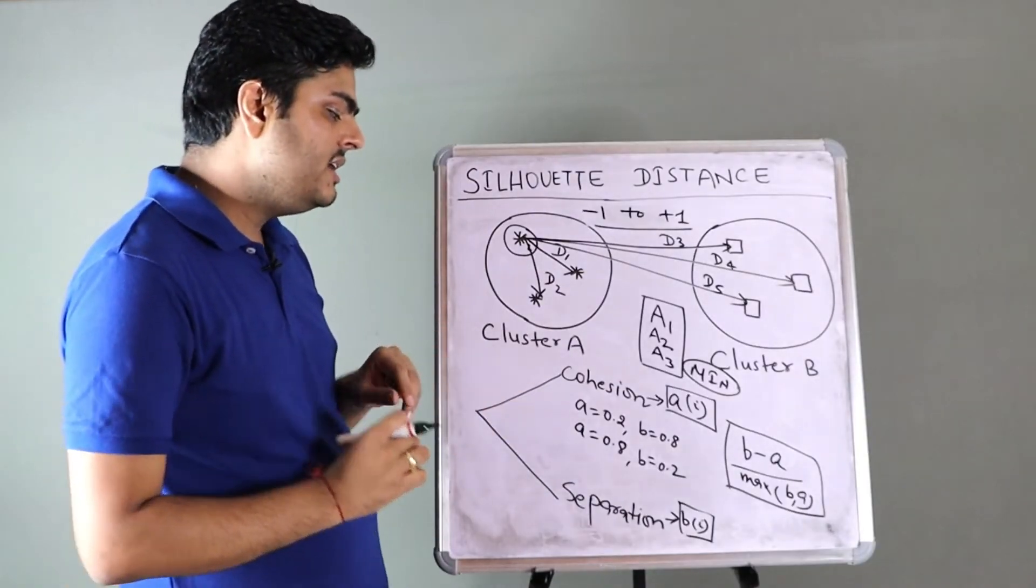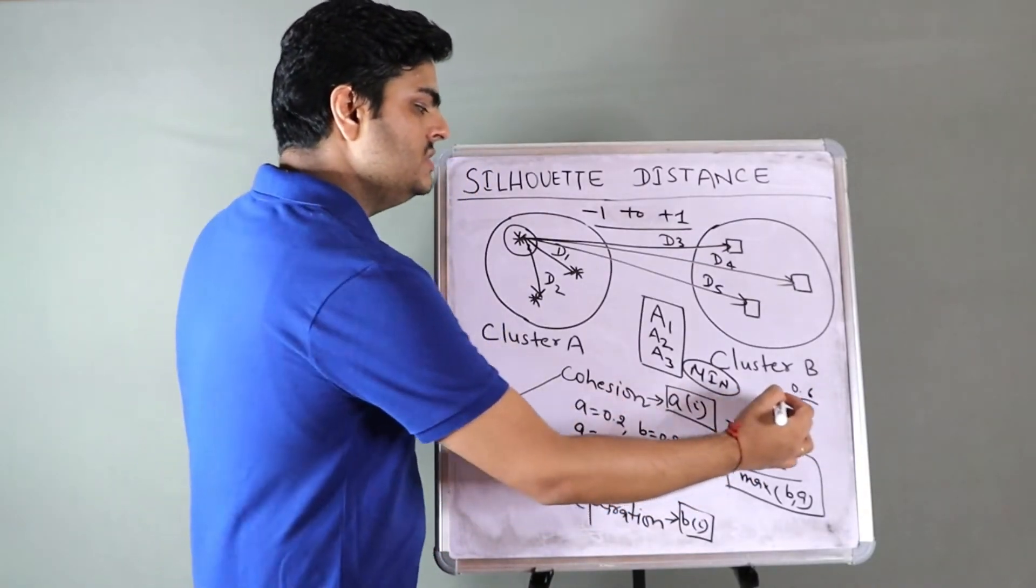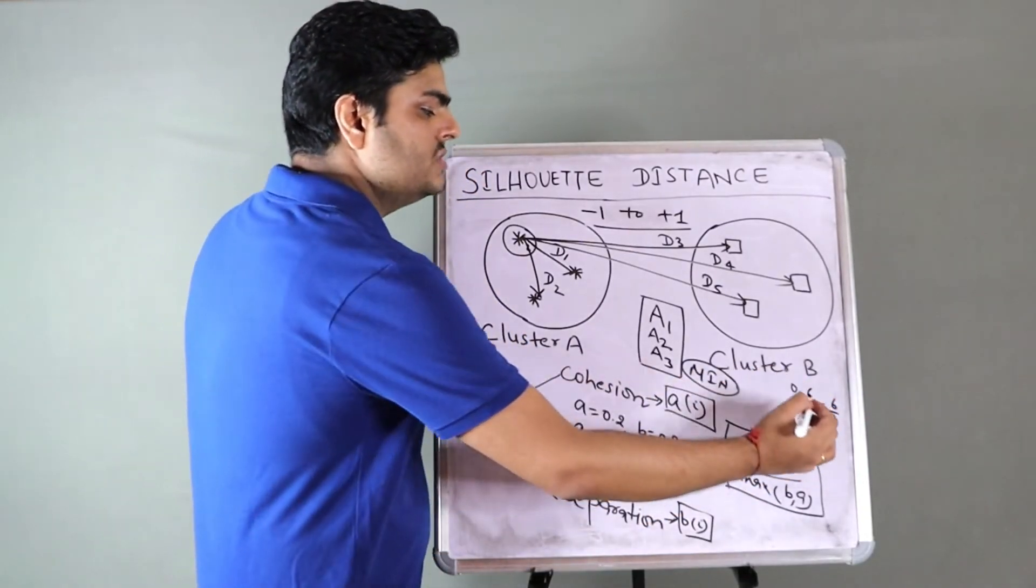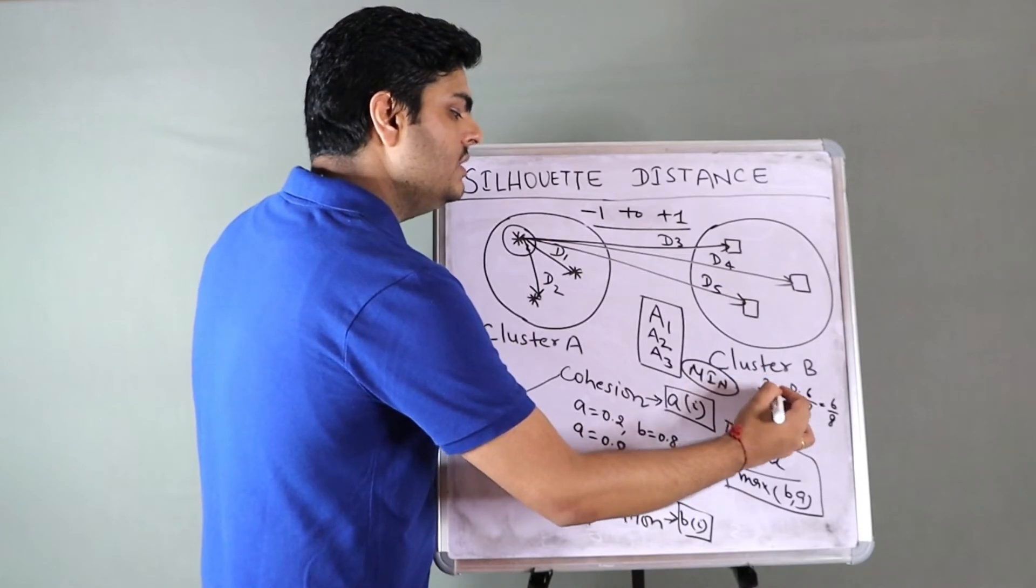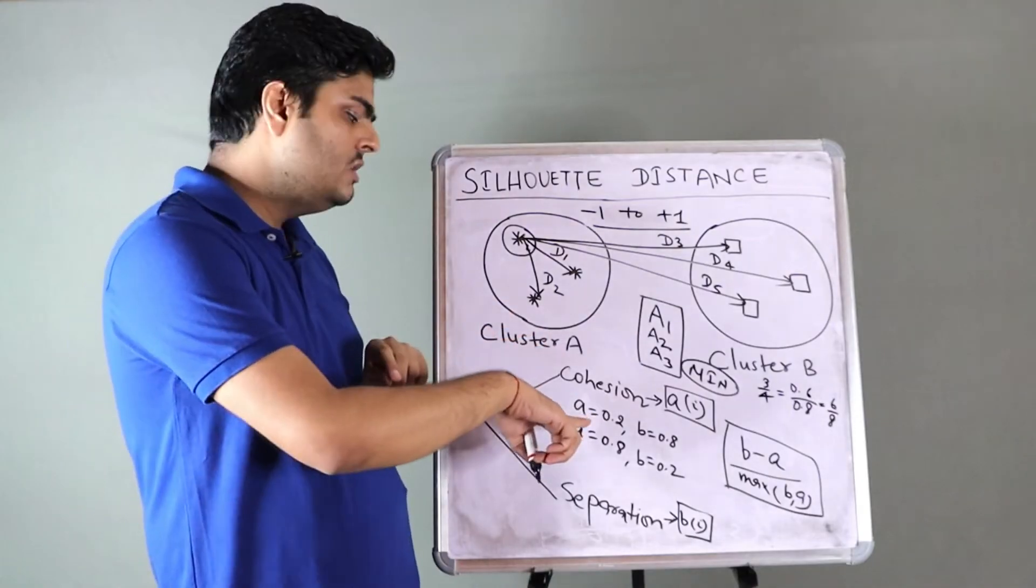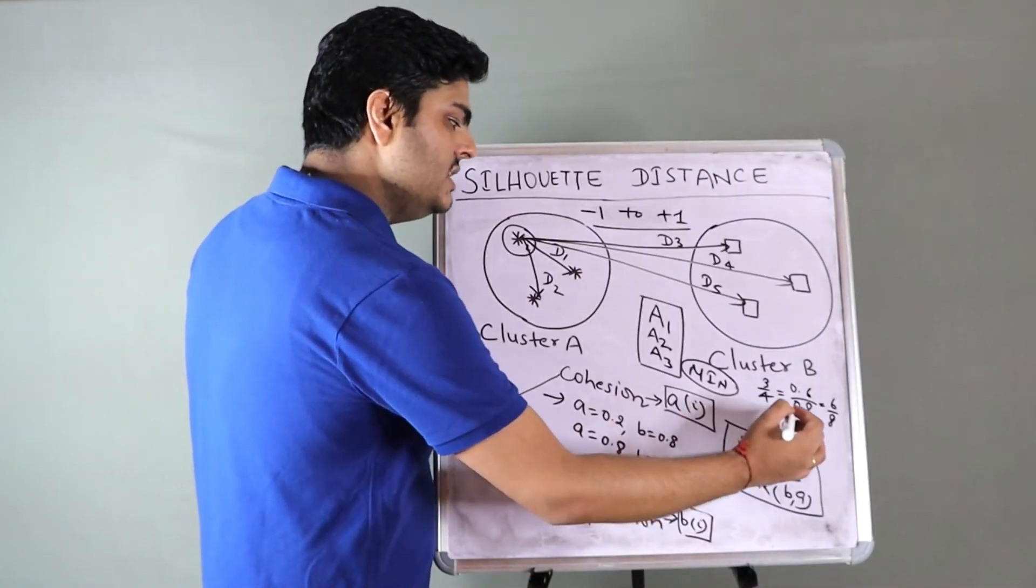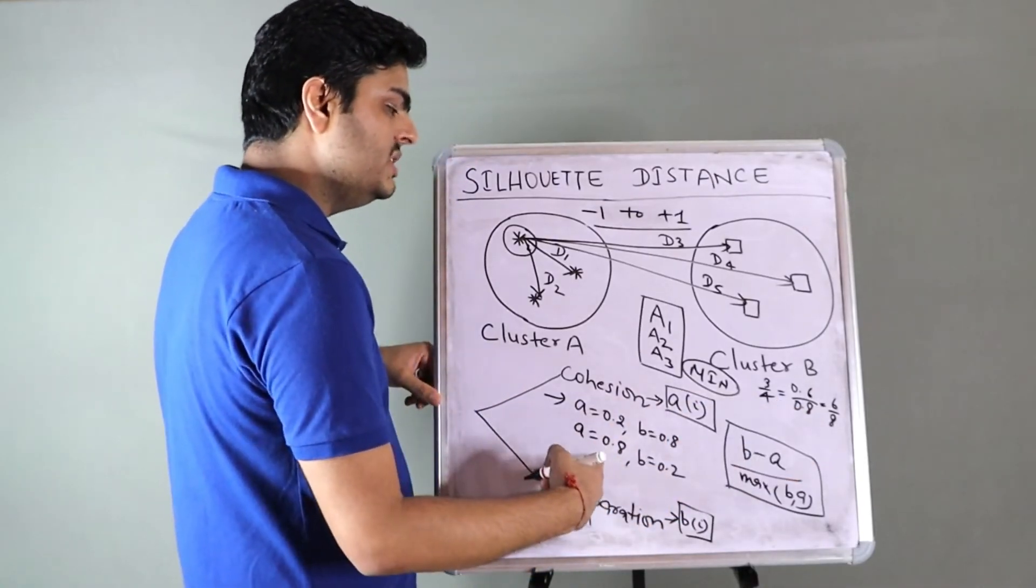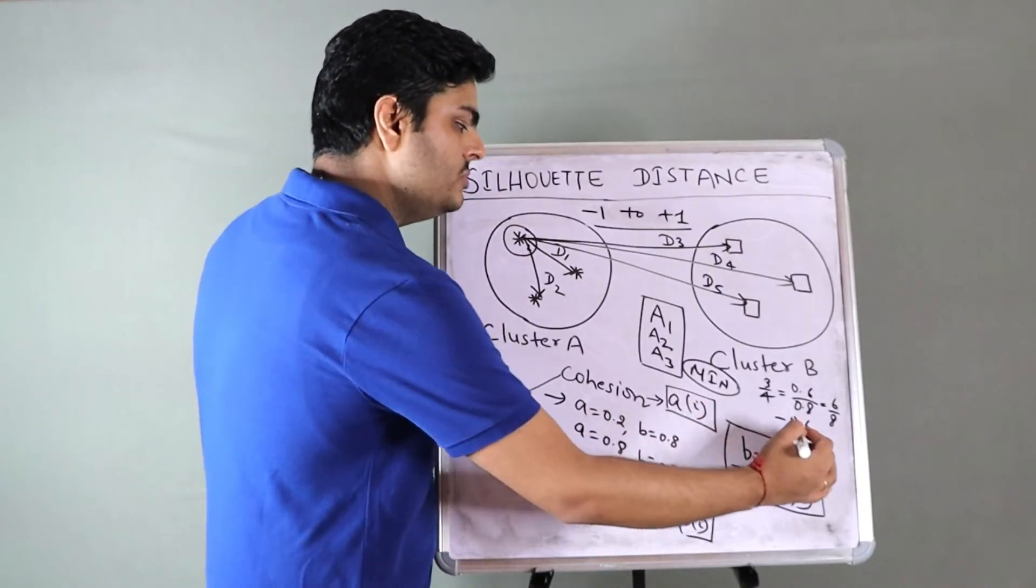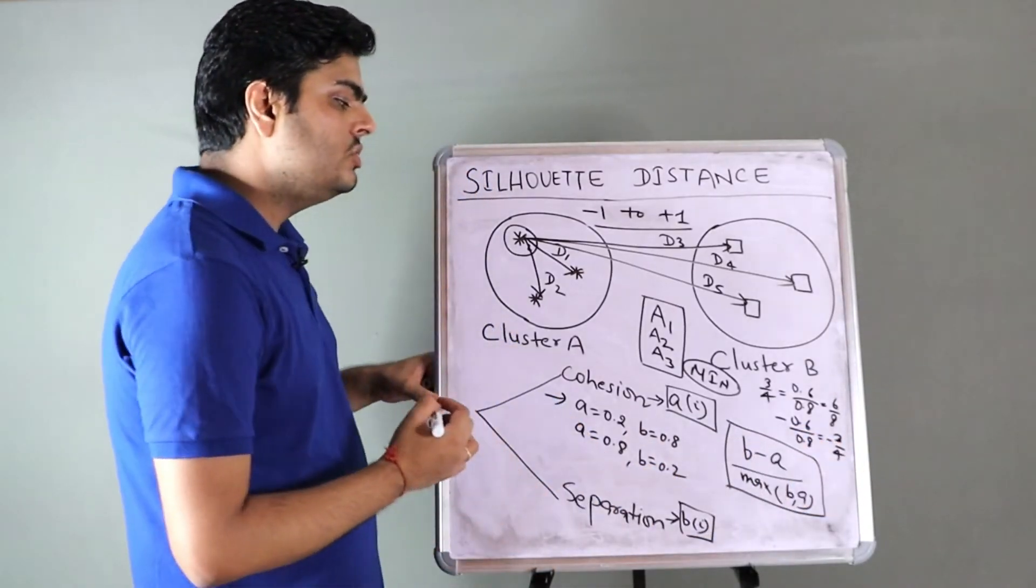Once you have your A and B, then your silhouette coefficient is nothing but B minus A. And since we want to measure this on the same scale, hence to normalize it, max of B and A. This is nothing but your silhouette coefficient for one particular data point that we discussed now. How this is making sense? Let us give some numbers and it will be very easy to understand.